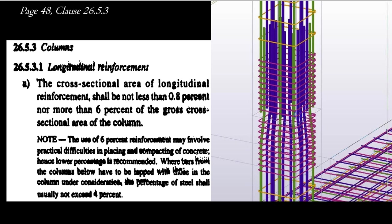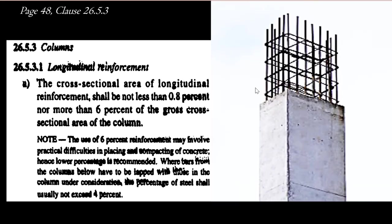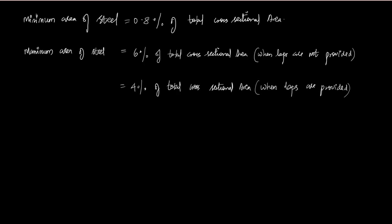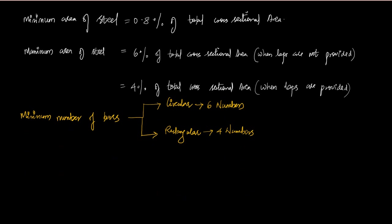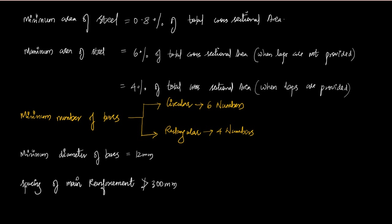Recap: the minimum area of steel for a column is 0.8% of the total cross-sectional area. The maximum area of steel is 6% when laps are not provided, and 4% when lapping is provided. The minimum number of bars is six for a circular column and four for a rectangular column.